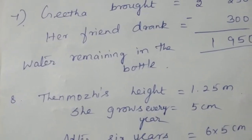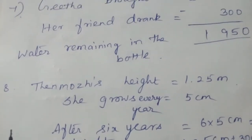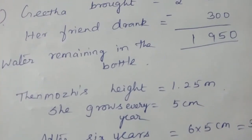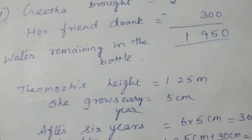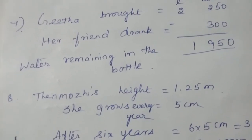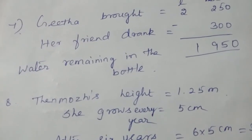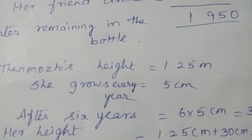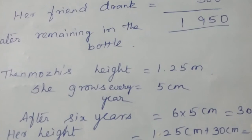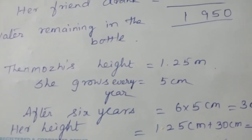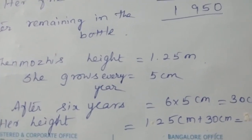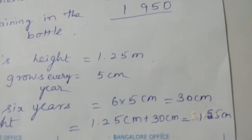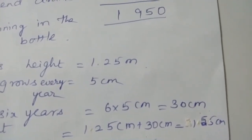Then the next equation is the 8th equation, Thane-Maurice. Thane-Maurice's height is 1.25 meter and she grows 5 centimeter every year. What would be her height after 6 years? The present height they have given is 1.25 and she grows every year 5 centimeter. So after 6 years what will her height be? 6 times 5 we should multiply. By that we are getting 30 centimeter.